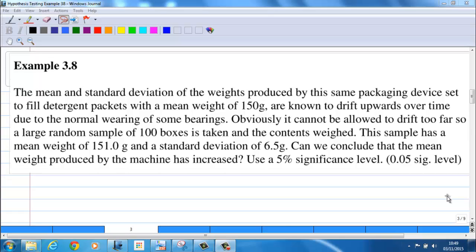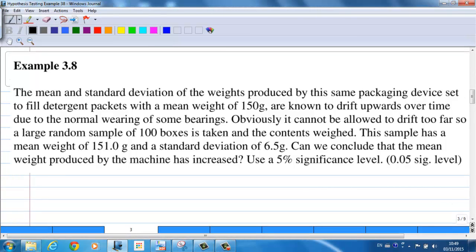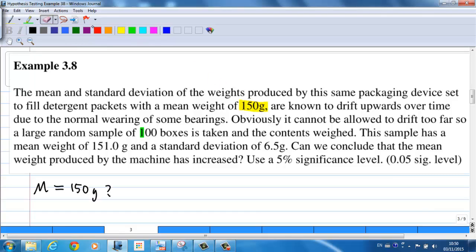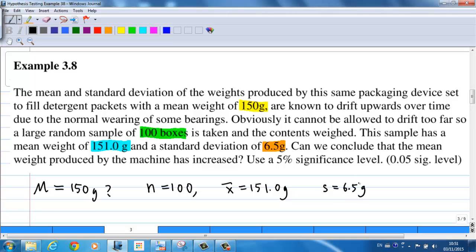Let's look at the information. We are testing whether the machine still produces packages with mean 150g. So mu is 150g from this information. We take a random sample of 100 boxes, so that means n equals 100, the sample size, which is large, and the sample mean is 151g. And the standard deviation from the sample is 6.5g.